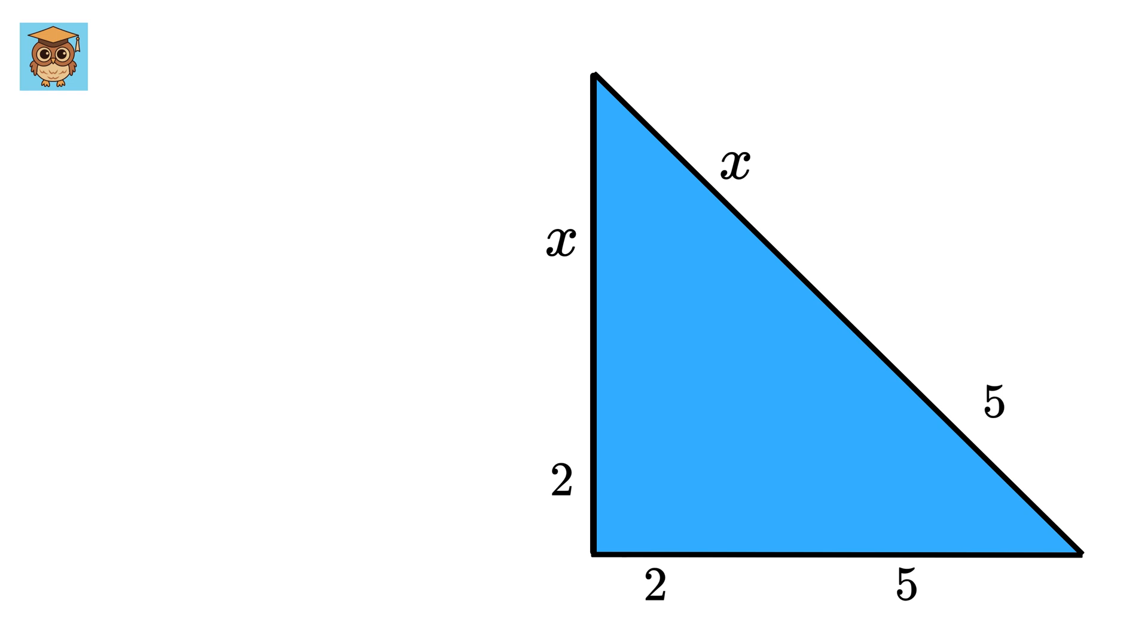Now consider this right triangle. This side is of length x plus 2. This is of length 2 plus 5, or 7. And the hypotenuse is x plus 5. So we will use the Pythagoras theorem to find x.